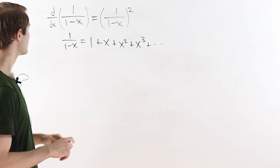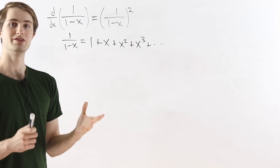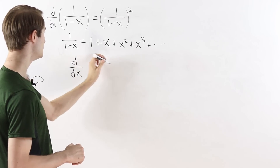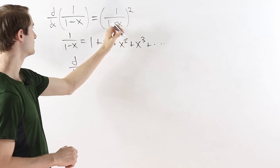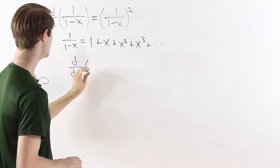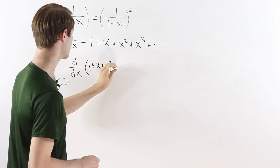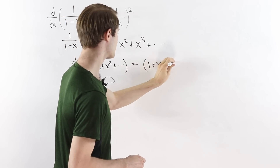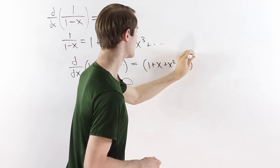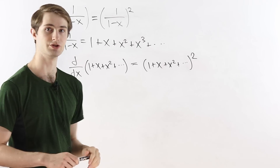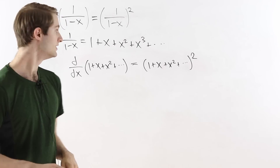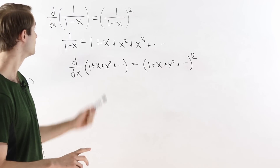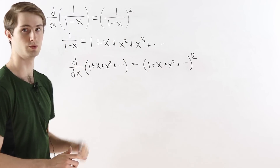Combined with the original result, this gives us an interesting equation: what we get if we substitute this infinite series into both parentheses. The derivative of 1 plus x plus x squared and so on equals 1 plus x plus x squared and so on, squared. You might ask: is there a way to prove this just using infinite series, if we pretend we don't know that this equals 1 over 1 minus x?